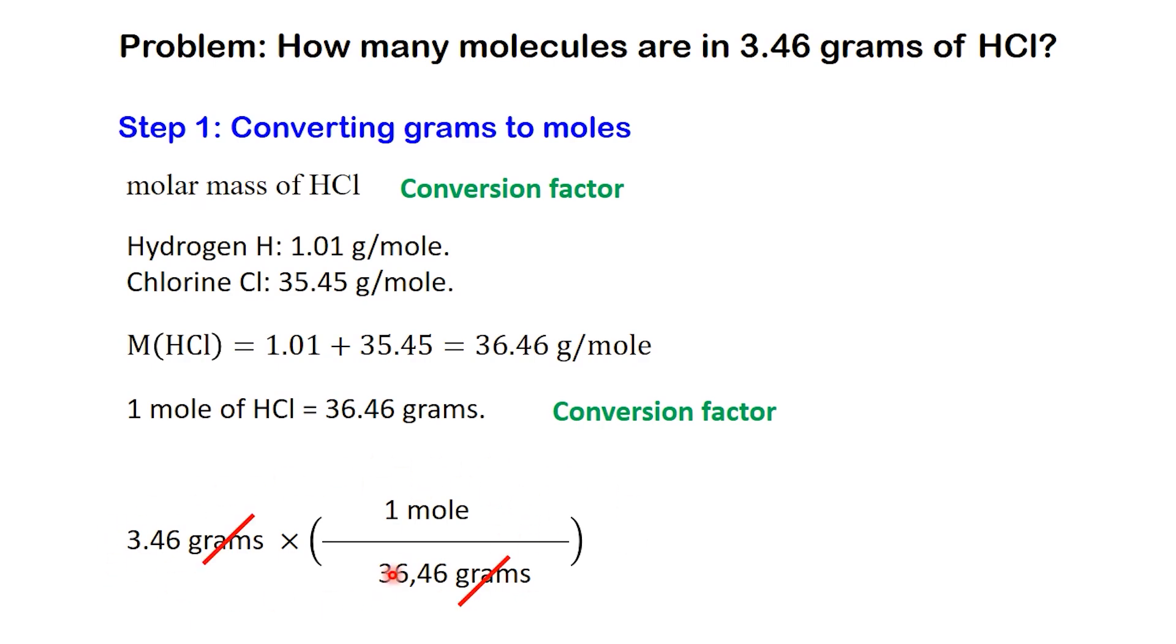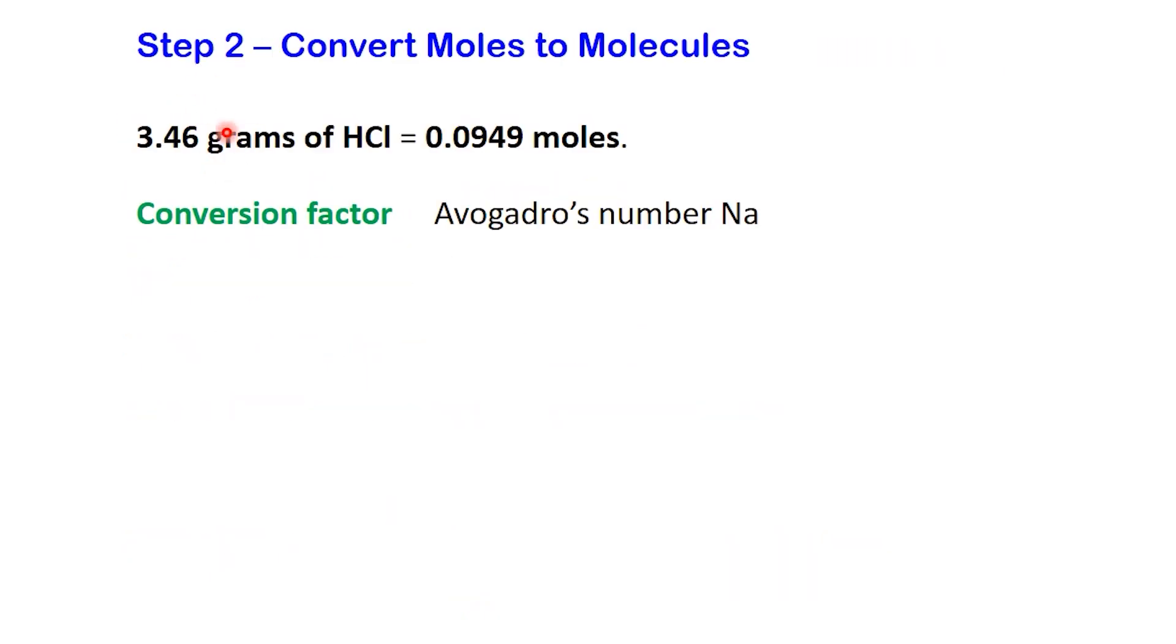Notice how the unit grams cancels out, and the only unit left is moles, which is what we want. Now we do the math. 3.46 divided by 36.46 equals 0.0949 moles of HCl. Now that we've completed step 1, we know that 3.46 grams of HCl is equal to 0.0949 moles.